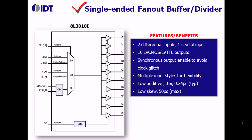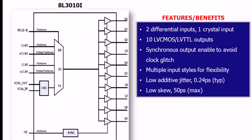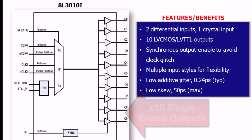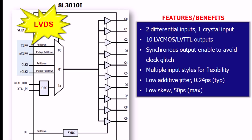Now let's consider some single-ended buffers. In this example, we have a differential signal or a crystal input coming in that is fanned out to 10 single-ended LVCMOS signals. Typically, the differential inputs can accept either LVDS, LVPECL, HCSL, or HSTL levels.